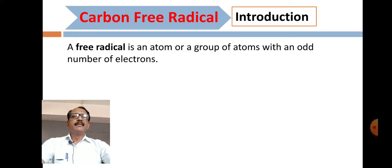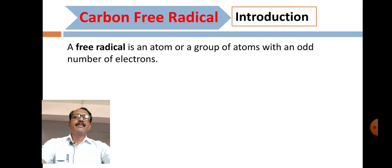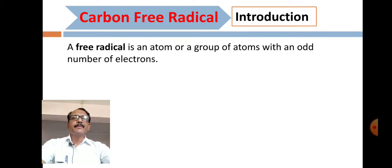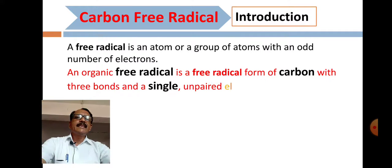A free radical is an atom or a group of atoms with an odd number of electrons — specifically, a single unpaired electron.